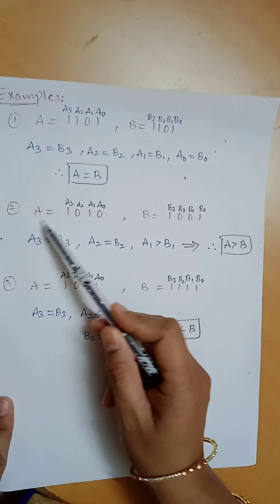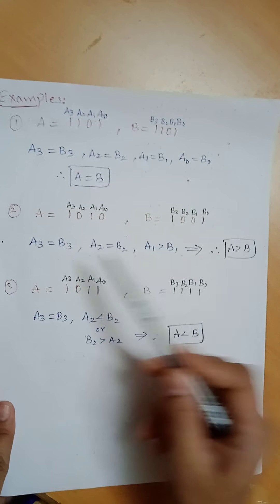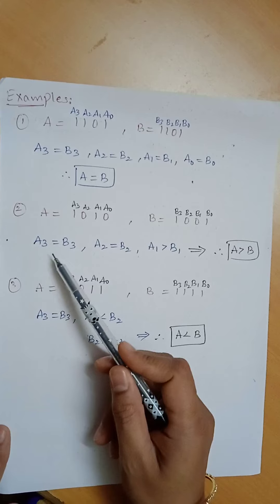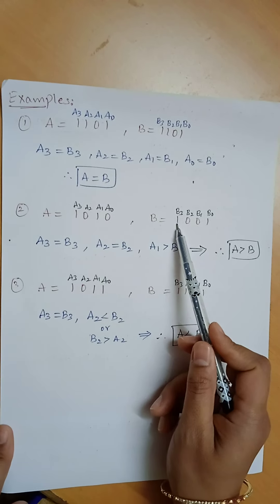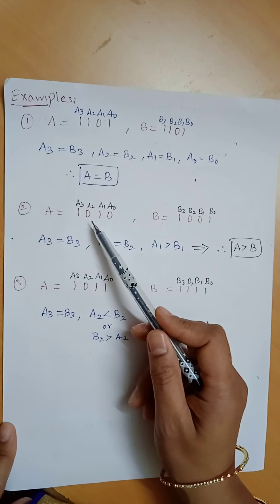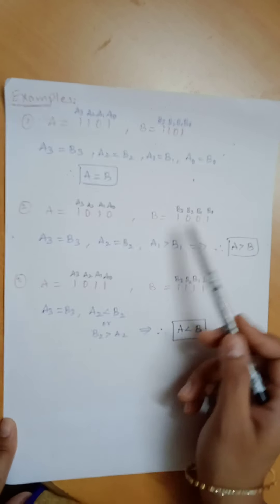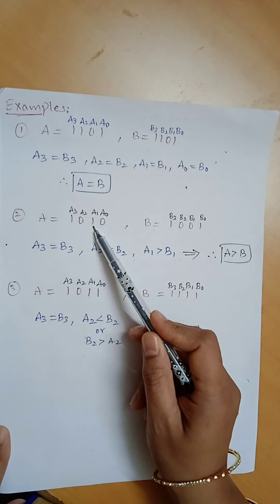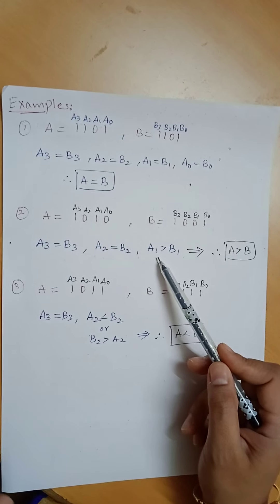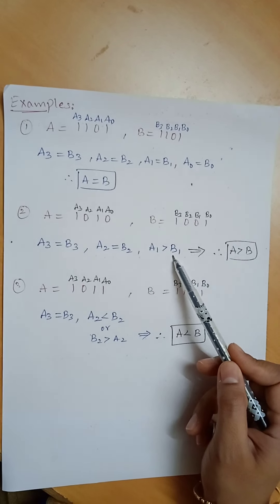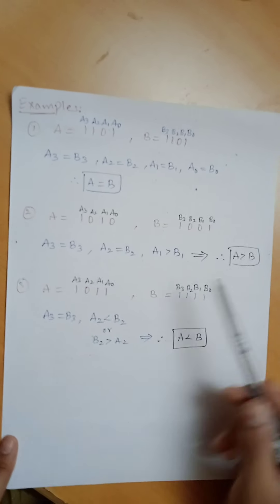Next case: A equal to 1, 0, 1, 0 and B equal to 1, 0, 0, 1. Comparison starts from the MSB bit. A3 equal to B3, A2 equal to B2 because both are 0. Next, A1 is 1 and B1 is 0. Since A1 is greater than B1, we conclude that A is greater than B.